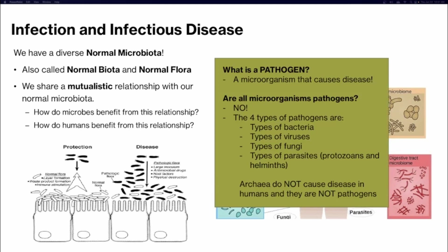What is a pathogen? A pathogen is a microorganism that causes a disease. Would all types of microorganisms be considered pathogens? Absolutely not. Types of bacteria, viruses, fungi, and parasites including protozoans and helminths can be pathogens, but archaea did not make this list — there are no known archaea that cause disease in humans, so they are not considered pathogens.